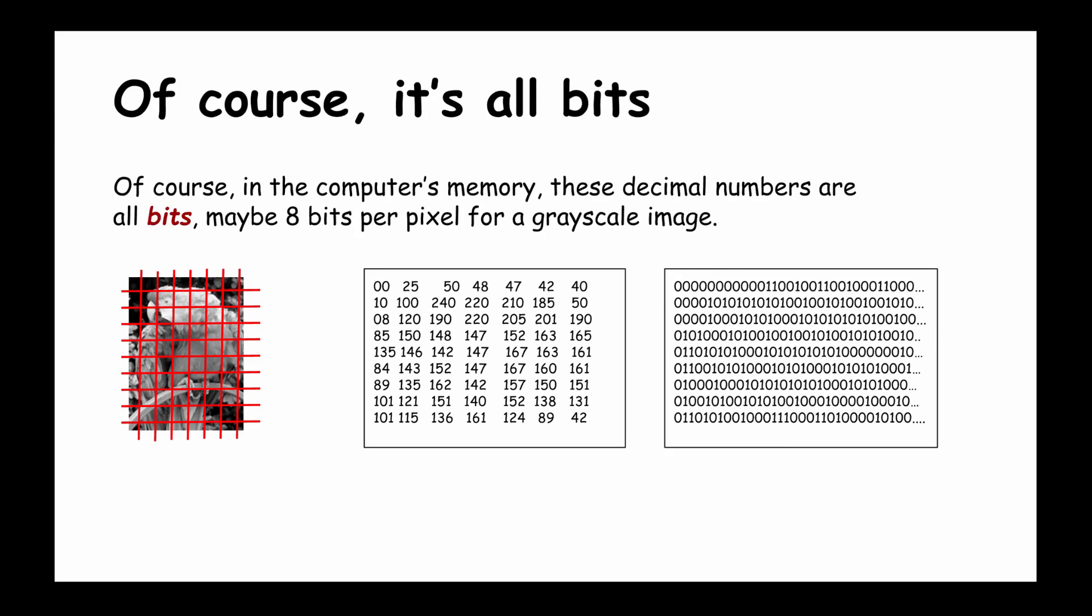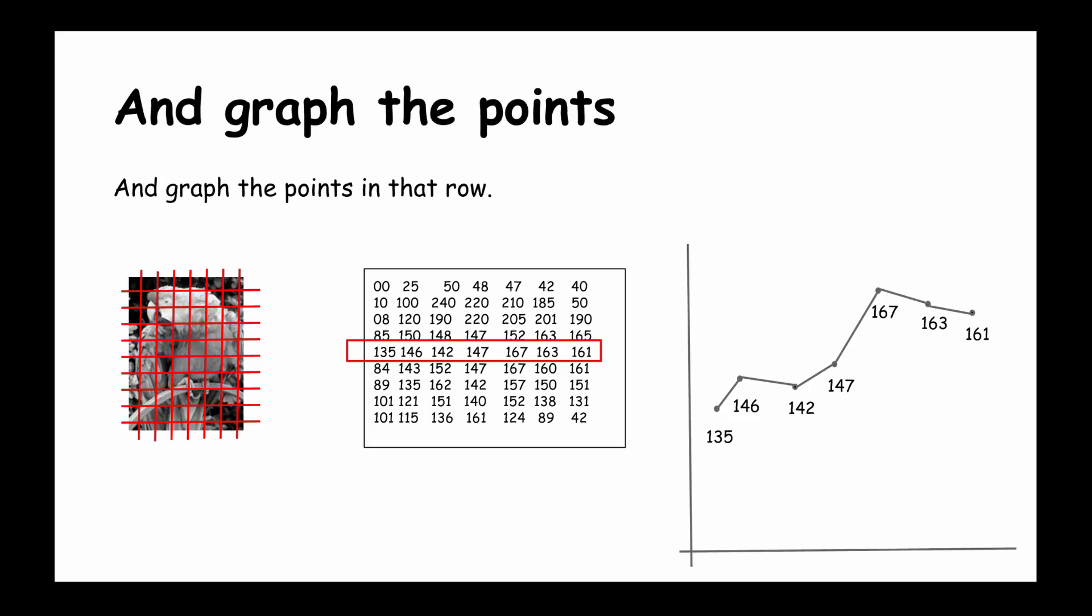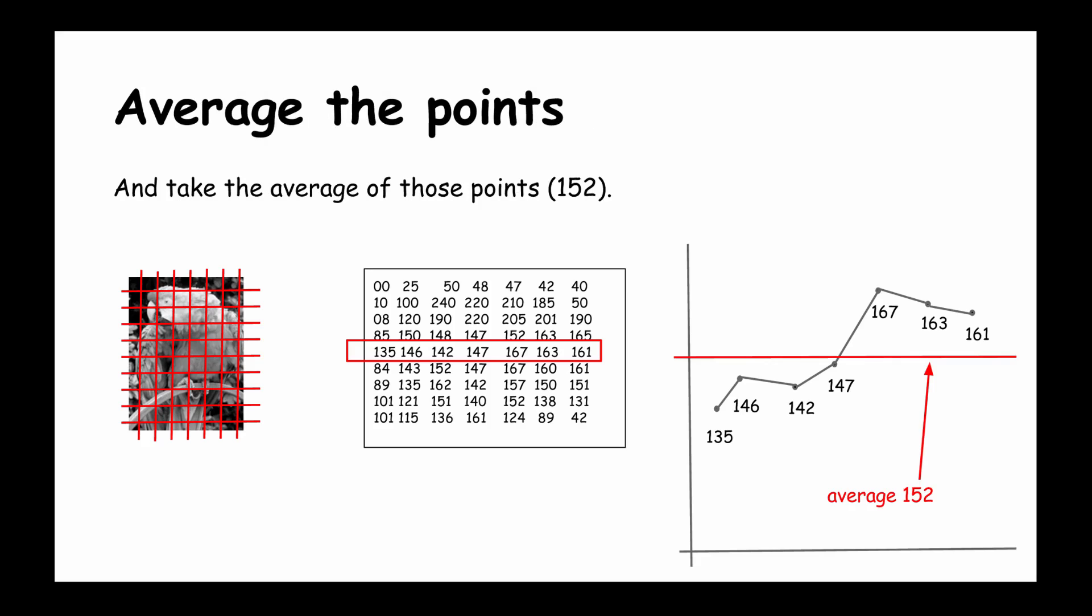Now suppose we look at one row of the image. I'm going to take these numbers and I'm going to graph them as points on this two-dimensional graph. Next we'll take the average of those points, so 152 is the average, and I'm drawing the red line to show that.